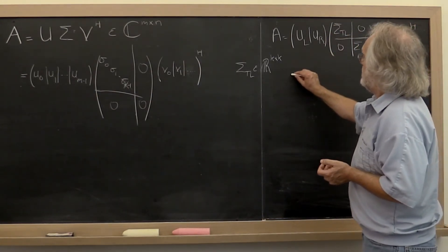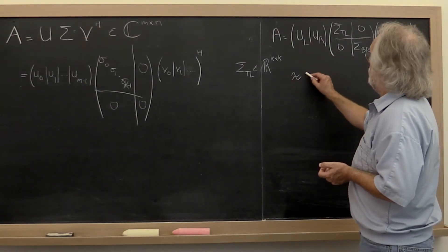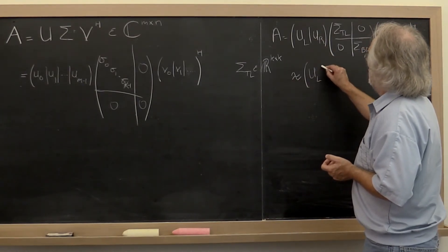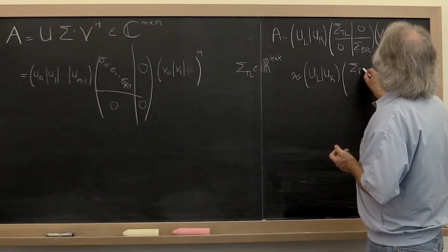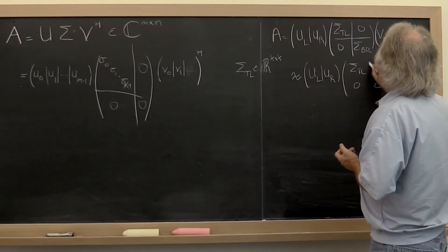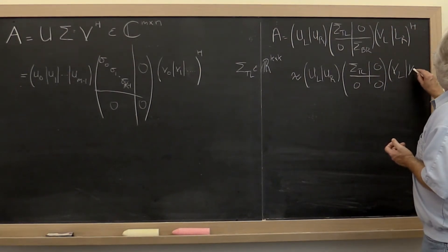Then we can say that A is approximately equal to U_left, U_right times sigma_top_left, zero, zero, zero times V_left, V_right,